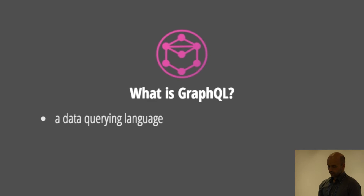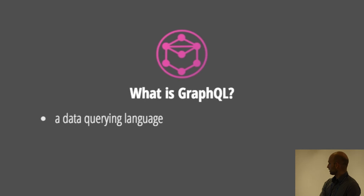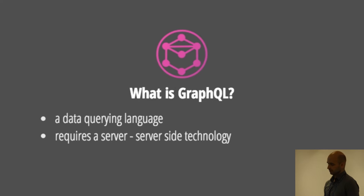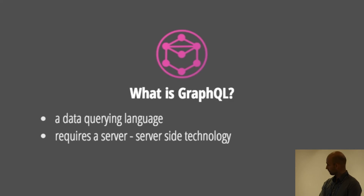So what is GraphQL? GraphQL is a lot of things — it's a whole framework — but mostly it's a data querying language based on JSON. It is server-side technology, so if you want to make use of GraphQL you need to have a server that supports it, but there's support for all the big server-side technologies: Java, Ruby, PHP, even Node.